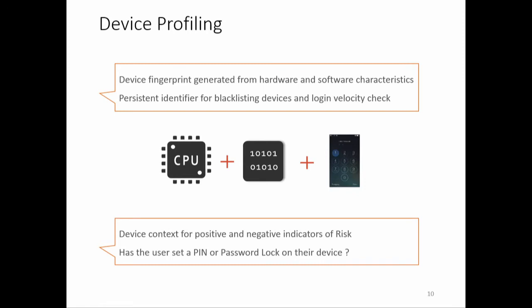Typically, attackers run automated scripts and cycle through known user ID and password combinations tested against known services. This is clearly not consistent with normal user behavior. By using the person identifier, we implement what we call login velocity checks and can protect against those kinds of attacks. We also use other device contexts to analyze both positive and negative indicators of risk — for example, whether the user has set a PIN or password lock on the device, which raises the security bar.